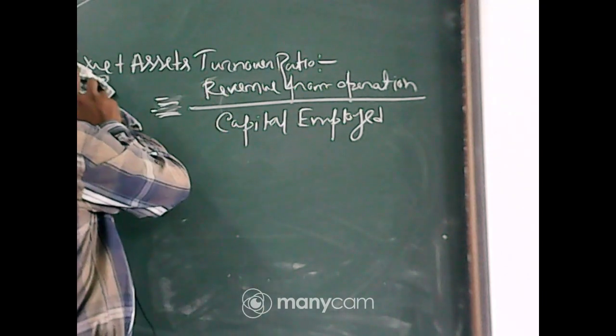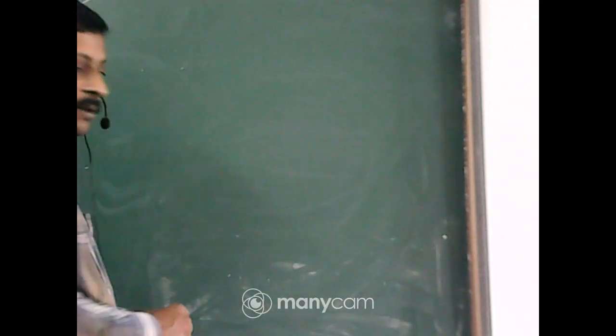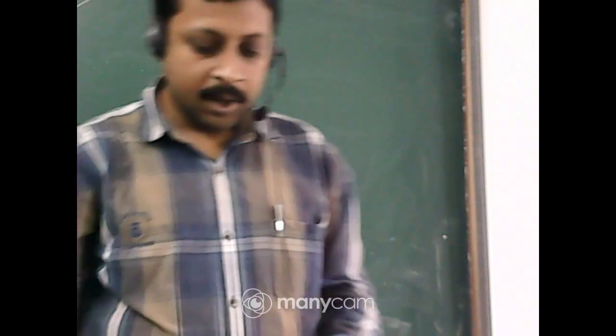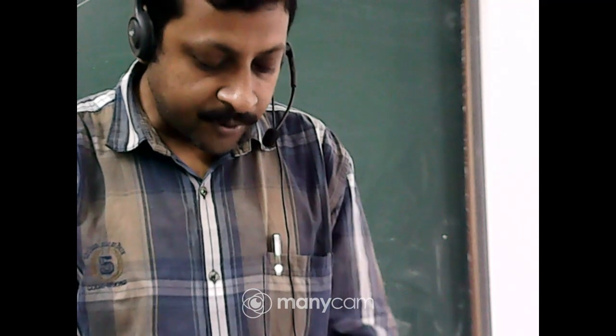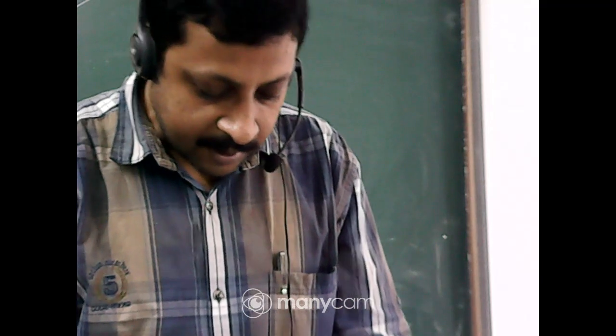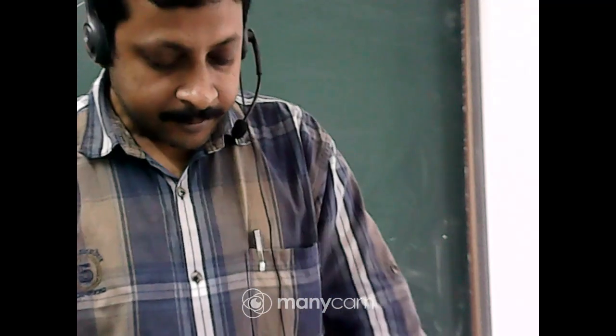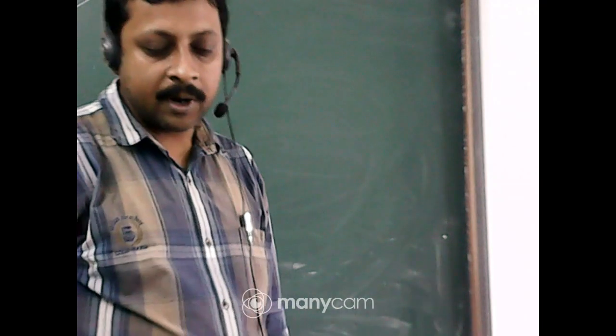This is the end of the ratio types. There are four types: liquidity ratio, solvency ratio, profitability ratio, and turnover or activity ratio. Now we will do a practical example. From your NCERT book, question number twelve of the exercise on the accounting ratios chapter — compute gross profit ratio, working capital turnover ratio.